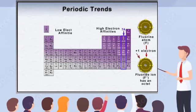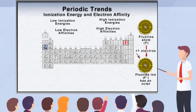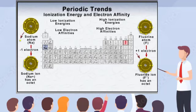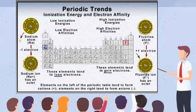On the left, the electron affinity values are much lower, and the elements in group 2A actually have positive values, indicating that it is much more difficult for these elements to gain electrons. The elements on the left side of the periodic table have low ionization energies, meaning they tend to lose electrons, becoming cations in order to attain an octet. The elements on the right side of the periodic table have high electron affinities, meaning that they tend to gain electrons, becoming anions in order to attain an octet.